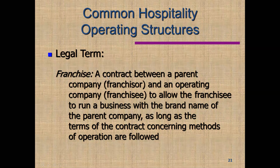A franchise is a contract between a parent company — the franchisor, think McDonald's — and an operating company, the franchisee, which is the mom-and-pop business that buys the franchise. The franchisee doesn't put their own name out front; it just says McDonald's and looks like all the other McDonald's in the world, but this particular McDonald's isn't owned by McDonald's — it's owned by Bob. That's actually how most fast food restaurants are owned. There are a few owned by the actual franchisor, but most are owned by franchisees.